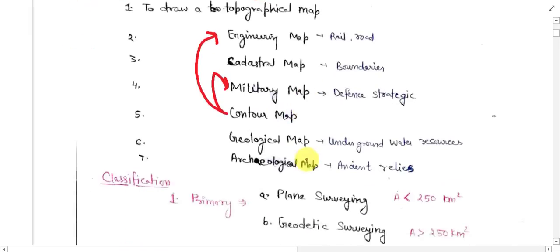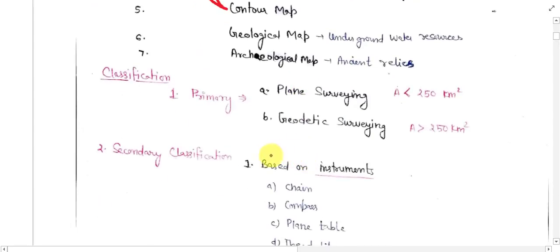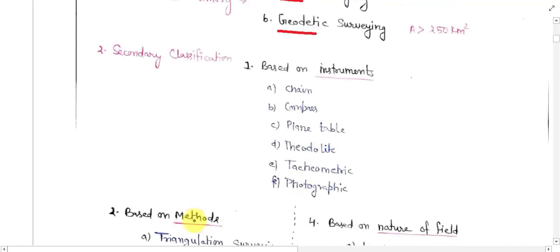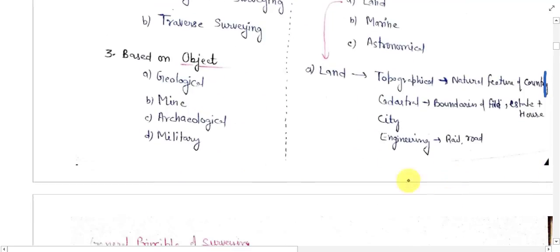Map classification is based on broadly two parameters. The first one is type of surveying like plain surveying or geodetic surveying. Another classification is based on instrument, based on method, nature of field, and object.